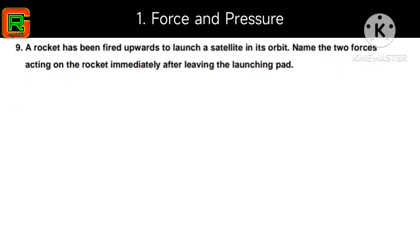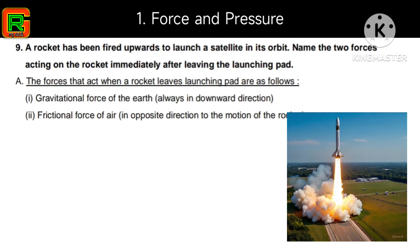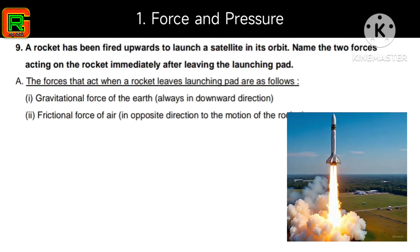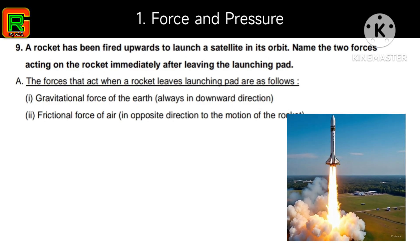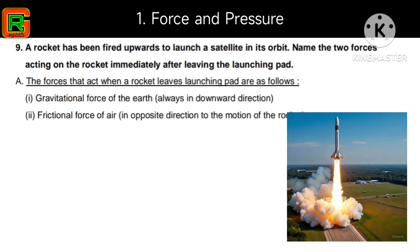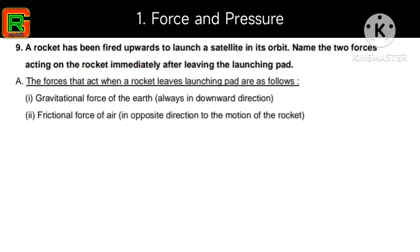Ninth question: a rocket has been fired upwards to launch a satellite in its orbit — name the two forces acting on the rocket immediately after leaving the launching pad. First, gravitational force of the Earth acting downward. Second, frictional force of air acting in the opposite direction to the motion of the rocket.